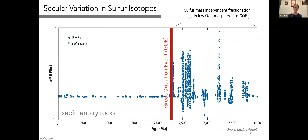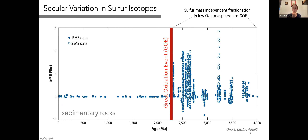Going back to the sedimentary rock record: I'm showing Δ³³S for sedimentary rocks across Earth history. Prior to 2.3 billion years ago, you have large values — tens of per mil in some cases — and after that this signal is eliminated from the rock record. The reason people associate this with low atmospheric oxygen is that these signals are thought to arise through SO₂ photolysis reactions, driven by UV radiation that is generally blocked by oxygen and ozone. Very low concentrations of oxygen are needed to allow UV radiation to penetrate the atmosphere and create these mass-independent fractionations.